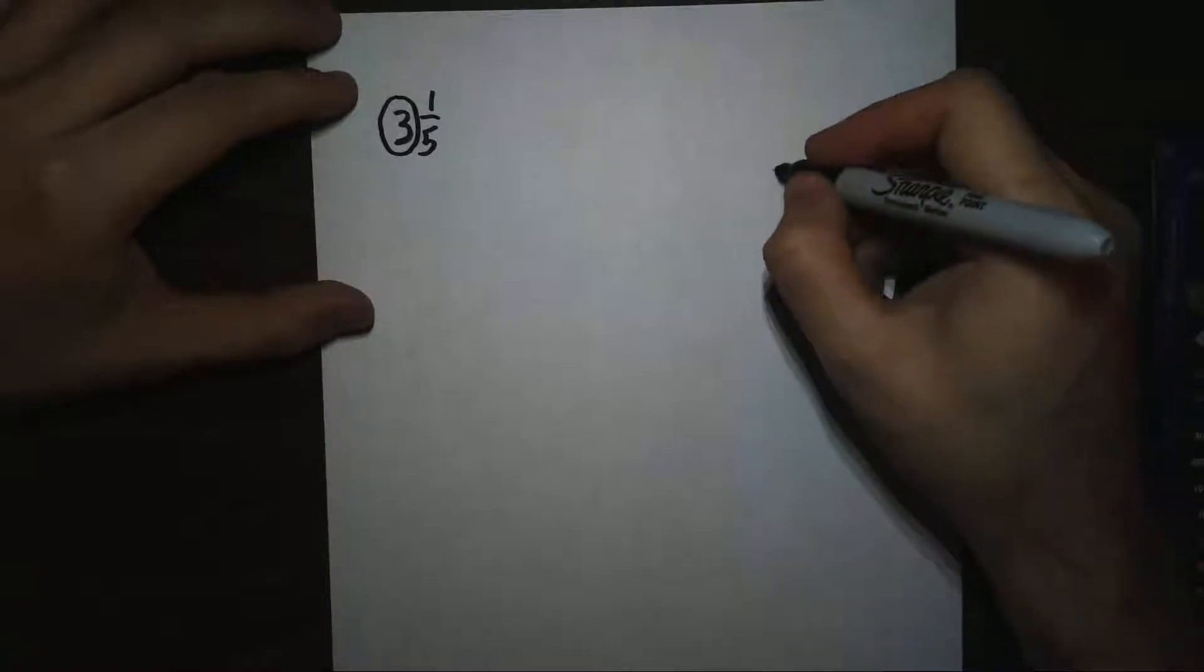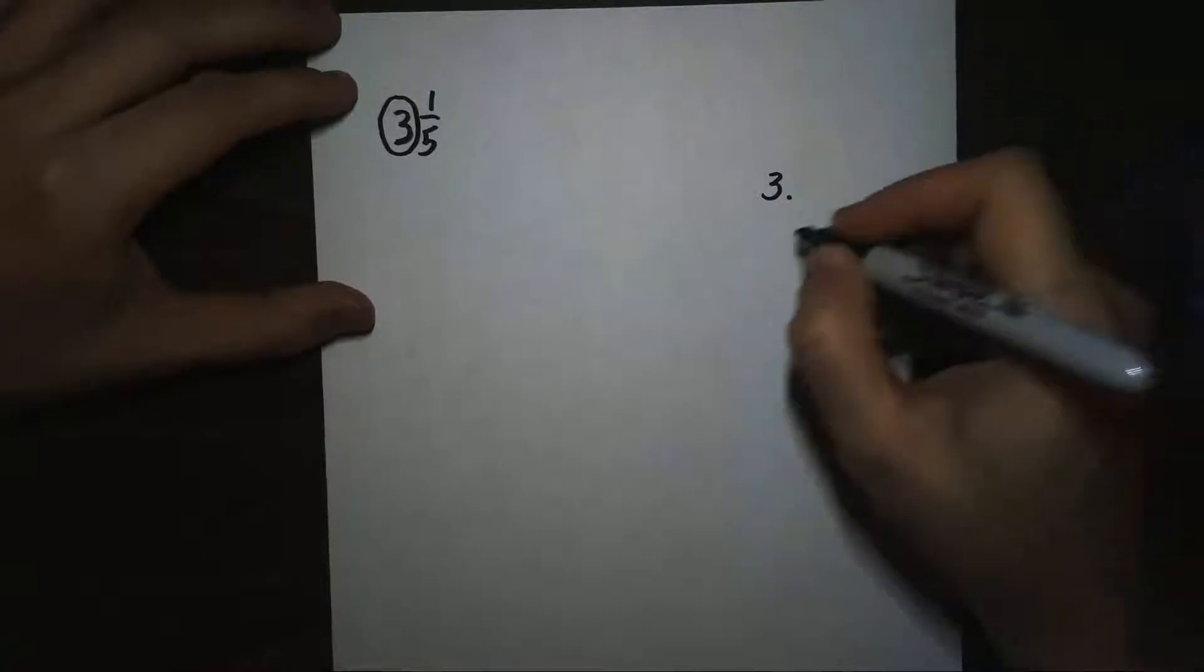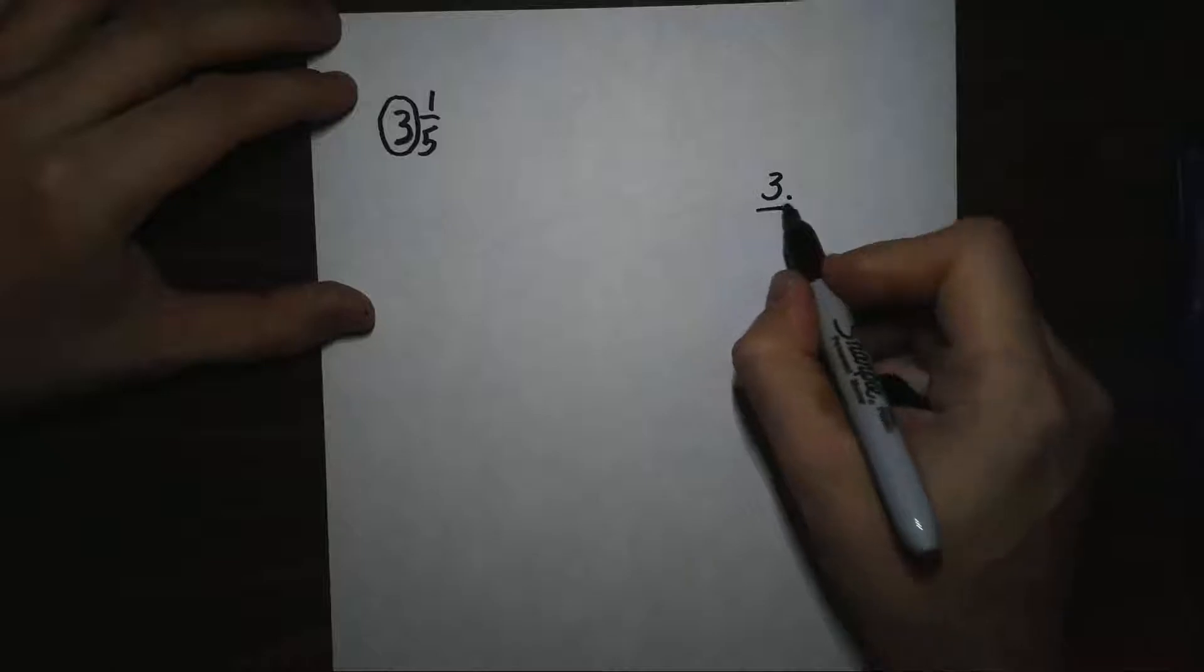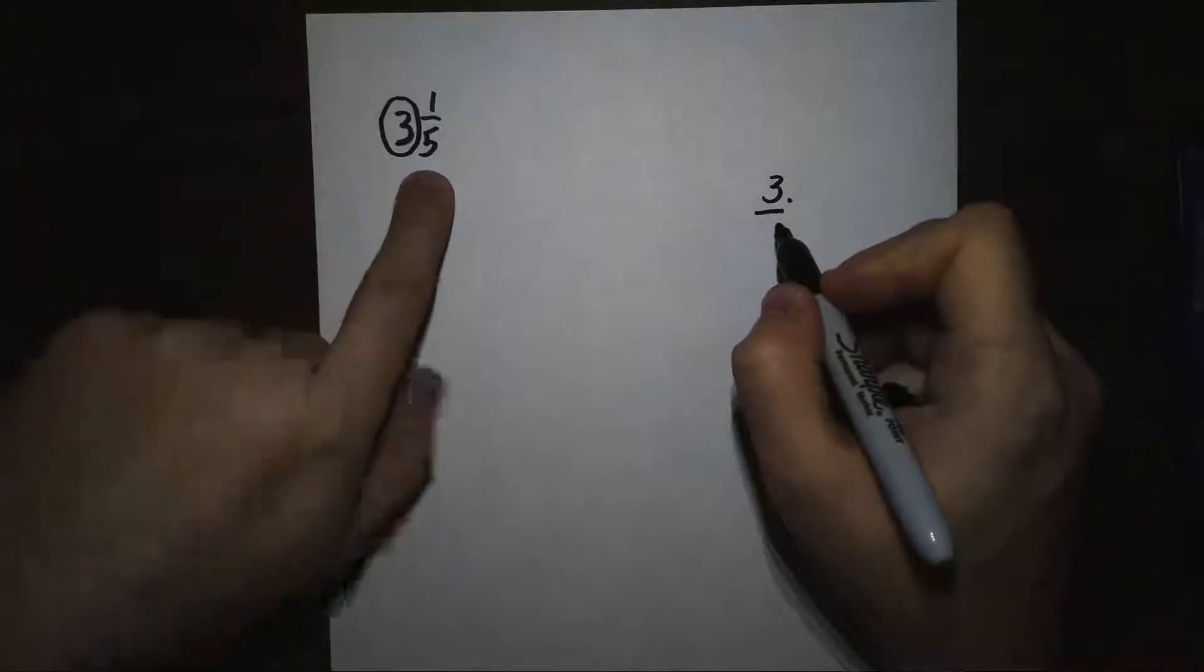We know that our answer is going to be something like 3 point something. Because we know the whole number part is going to be 3, we just don't know what this fraction part is.